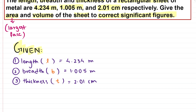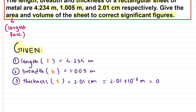Here we have a conflict — two measurements are in meters and the third is in centimeters. So we need to convert centimeters to meters. Since 1 meter equals 100 centimeters, 1 centimeter equals 10 raise to minus 2 meters. Therefore, 2.01 centimeters equals 2.01 into 10 raise to minus 2 meters, which in decimal form is 0.0201 meters. Now all three quantities are in meters.